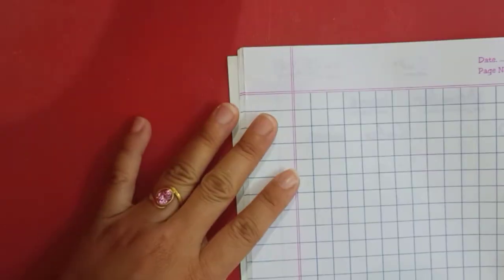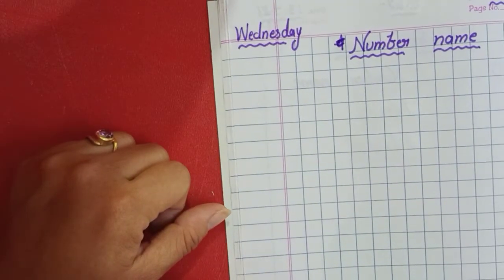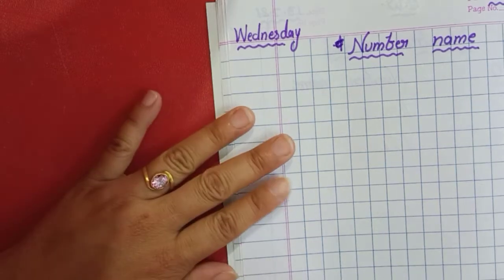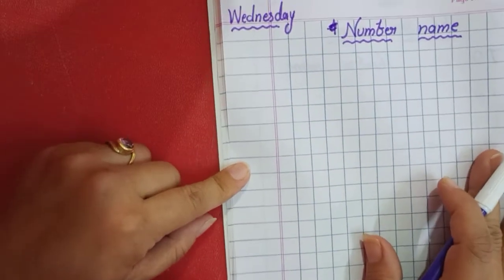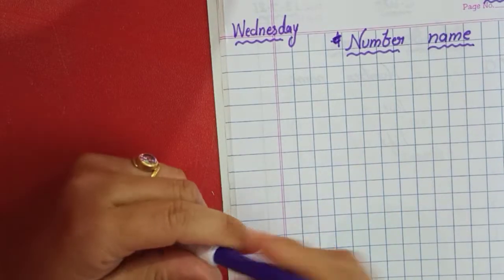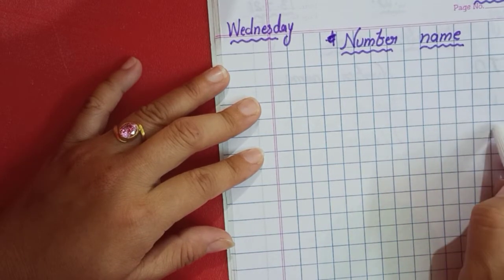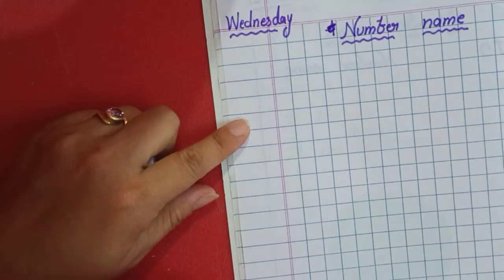Okay children, so these are your number names. Now check out your math notebook. We will do the number names in our notebook. We will write the number names 1 to 5 in the notebook as well — spelling written work. I will draw some pictures and you have to do the same, and write their number name — not the number, the number name.